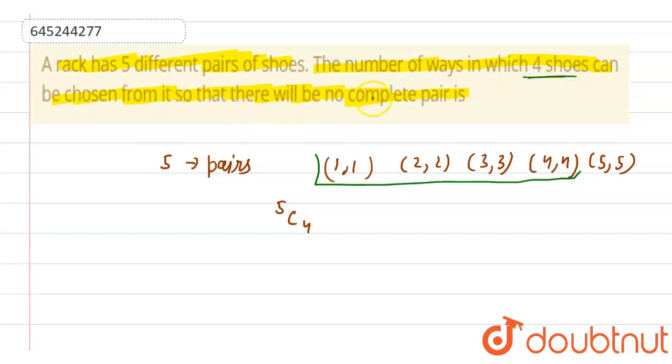But now I want four shoes to be chosen from it so that there will be no complete pair. So no complete pair, there is only a chance if I choose one from it. That is, these are two, I am choosing one from it, 2C1. Either I am choosing one from it, 2C1, or I am choosing one from this, so that means I am choosing one from this, one from this, one from this, and one from this.